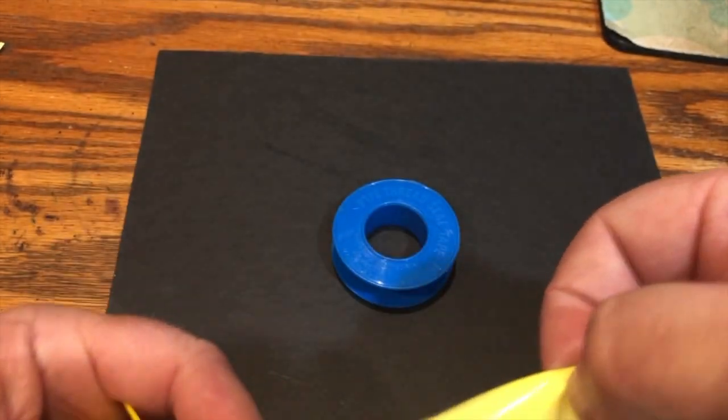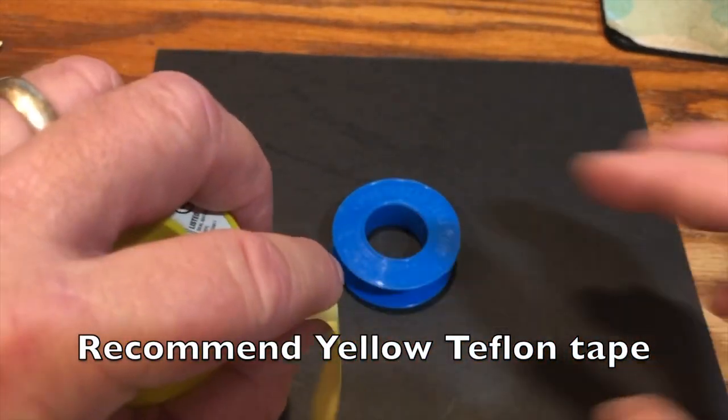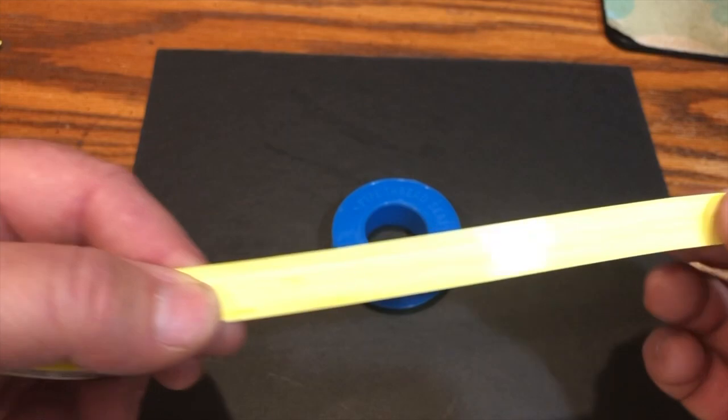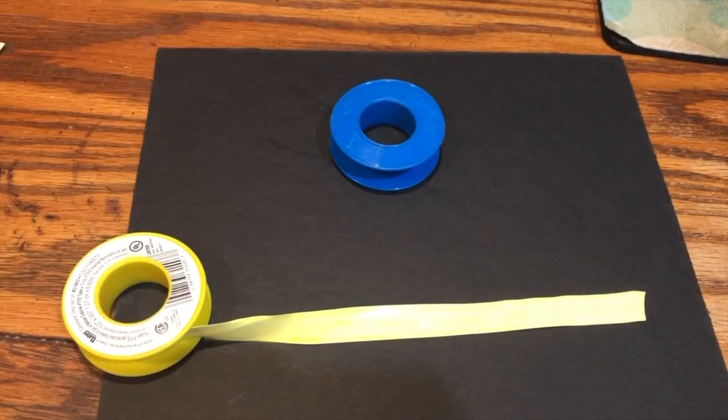Teflon tape looks like regular tape, and it's not sticky at all. It is used to wrap around the pipe fittings to give you that nice tight fit. And it's not sticky, but it's very slippery. And I'm going to show you how to write secret messages with this.